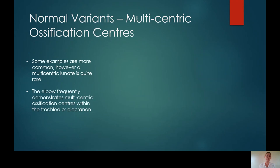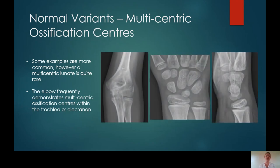Another example of a normal variant is multicentric ossification centres. The elbow frequently demonstrates multicentric ossification centres. Here you can see an example of a multicentric trochlear where it looks very fragmented — this is normal for the patient. There is also an example of a multicentric lunate, which is rarer. Ossification centres within children don't all form the same, and if you x-ray the other side, it may not look the same. These appearances are smooth and well-corticated. They don't look like fractures.